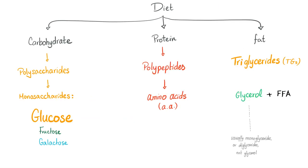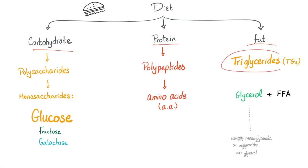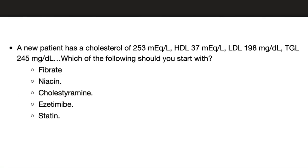Before we talk about statins, note that diet has three macronutrients: carbohydrate (the bun), fat (the cheese), and protein (the meat). Whether you eat carbohydrate, proteins, or fat, they end up in your small intestine and are broken down into small parts. Fat starts as triglycerides broken down into glycerol and free fatty acids — more precisely monoglycerides, diglycerides, etc.